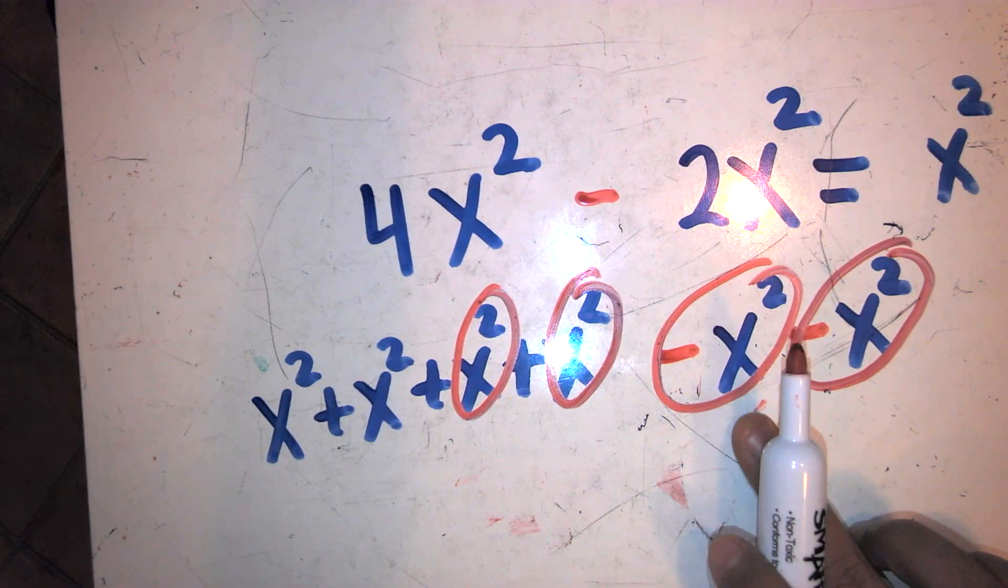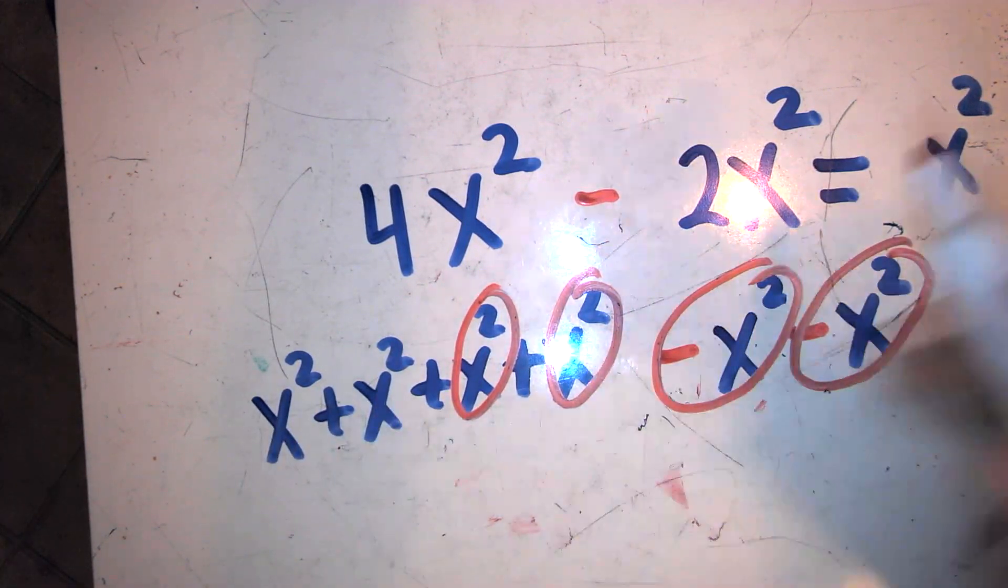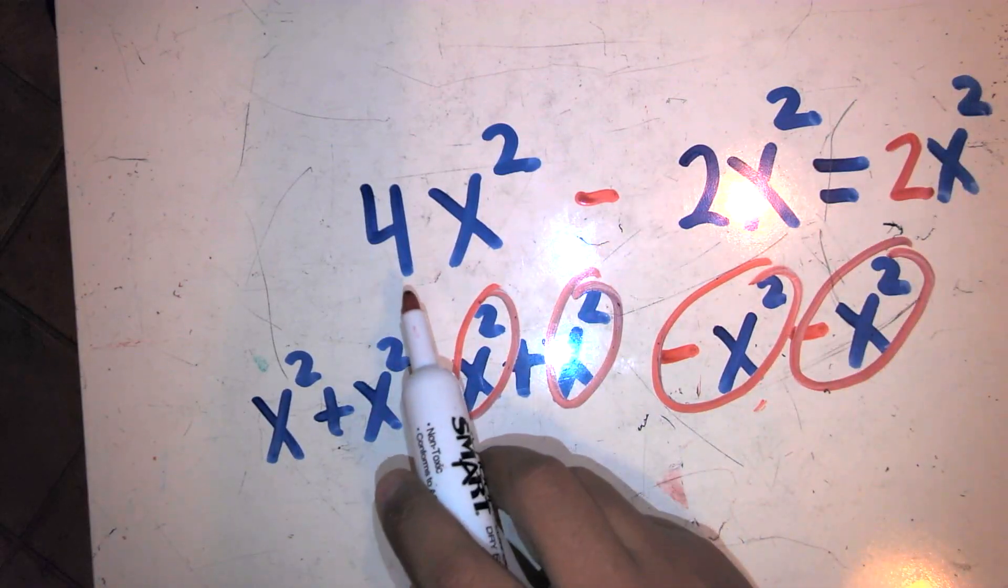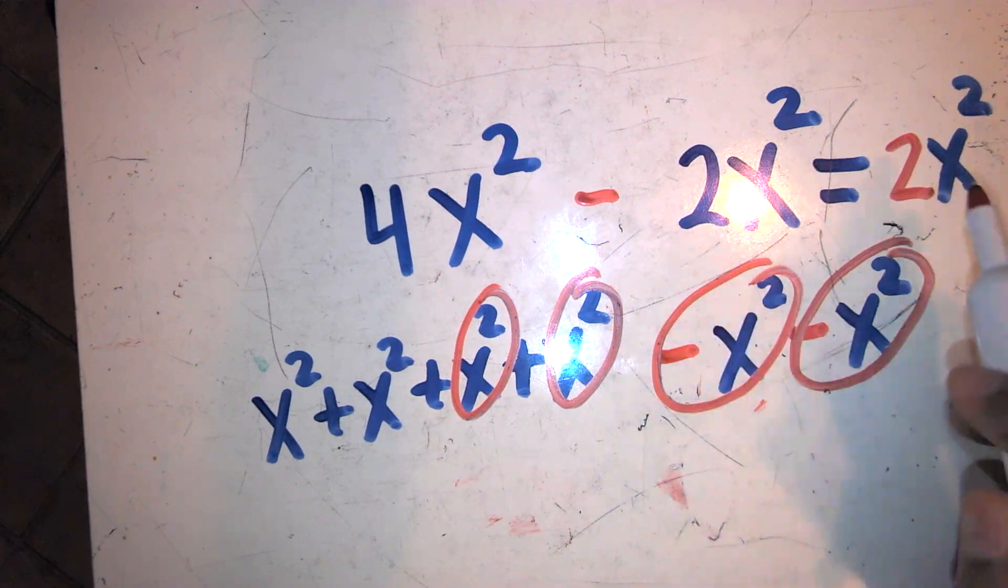One x squared, take it away. Another x squared, take it away. I'm left with two groups of x squares. Four x squares, take away two x squares. Four minus two equals two.